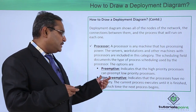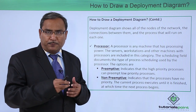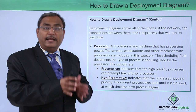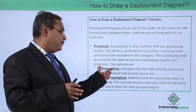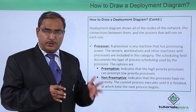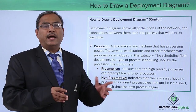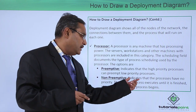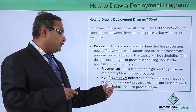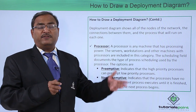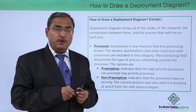Pre-emptive scheduling indicates that high priority processes can preempt low priority processes. If a process is currently being processed but a new process arrives with higher priority, the lower priority process must preempt the processor before completion to make room for the higher priority process. Non-preemptive indicates that processes have no priority; the current process executes until it is finished, at which point the next process begins, while other processes wait in the waiting queue.